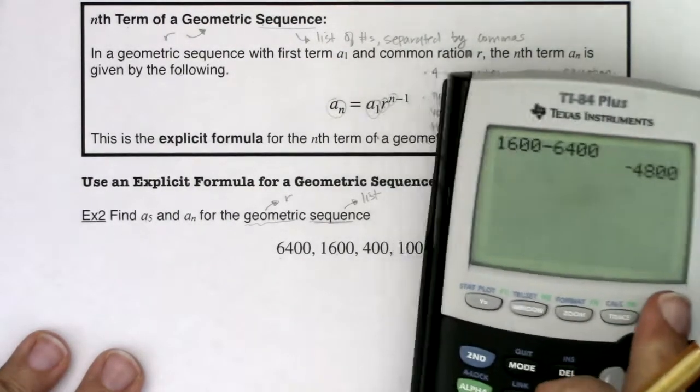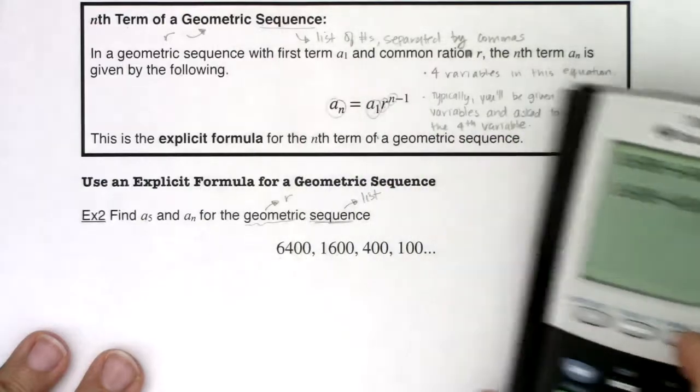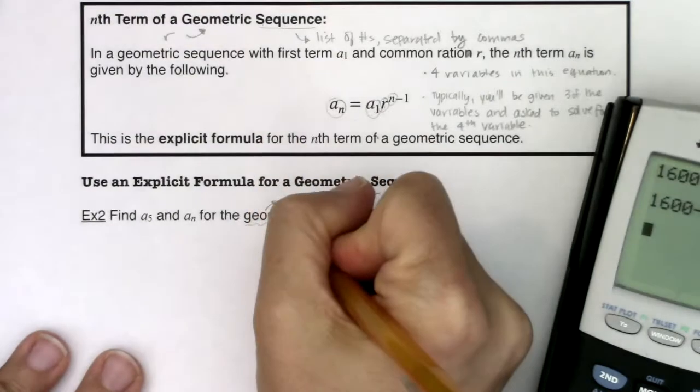If I did 1,600 minus 4,800 again, I should be at negative 3,200. And that's not the case here. You see the third term is 400. So this is not arithmetic.